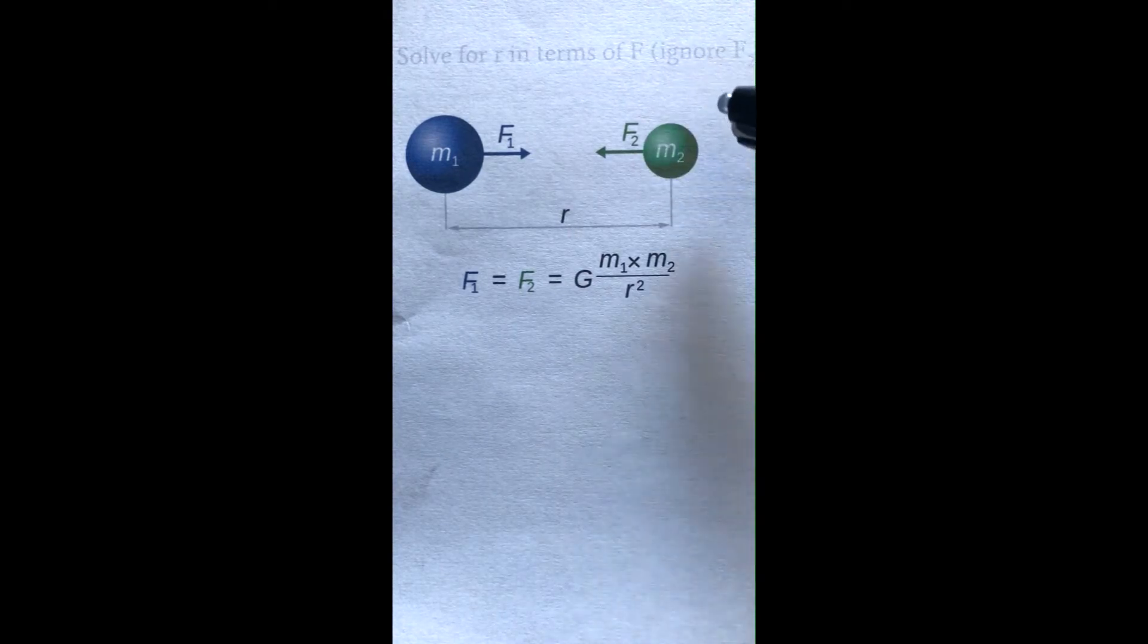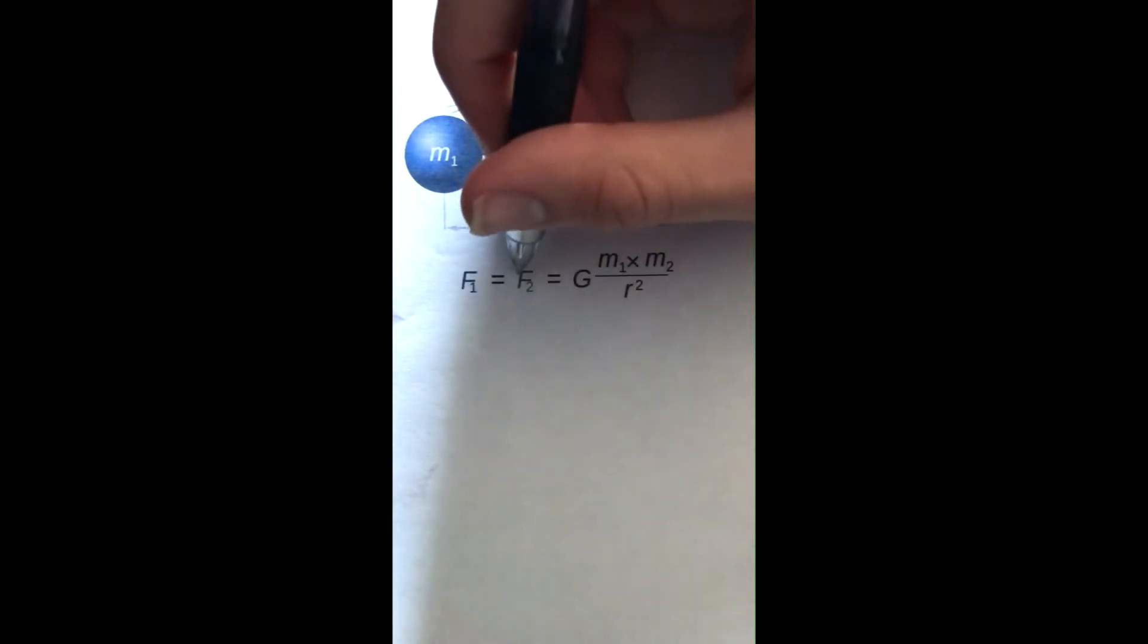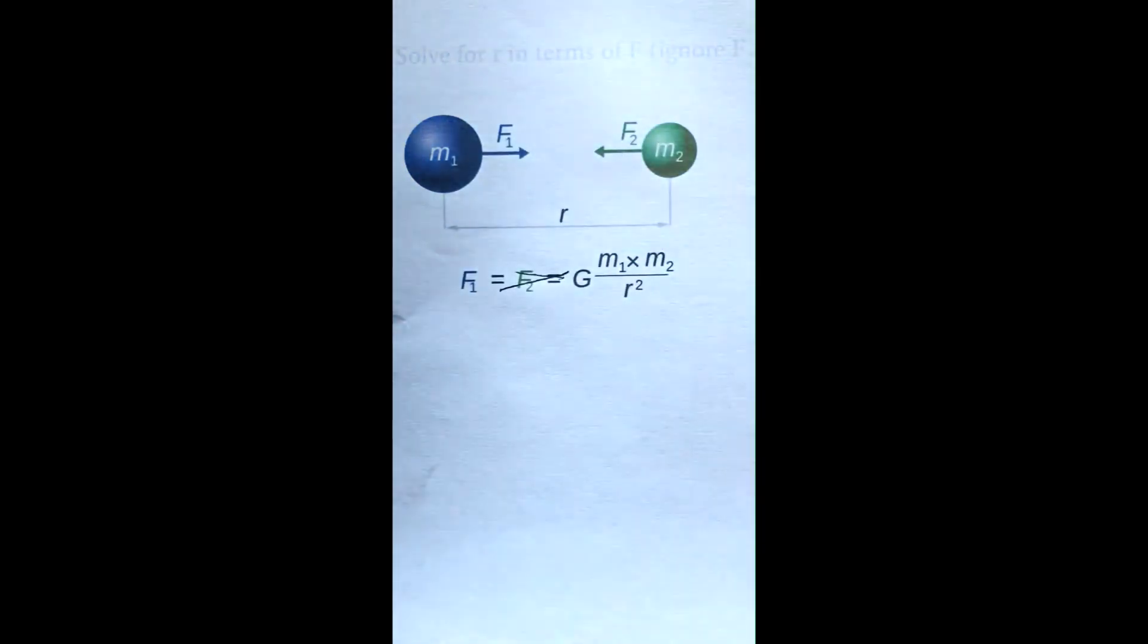The question is to solve for r in terms of F₁ and ignore F₂. The first thing you do is get rid of F₂ because it should be ignored.